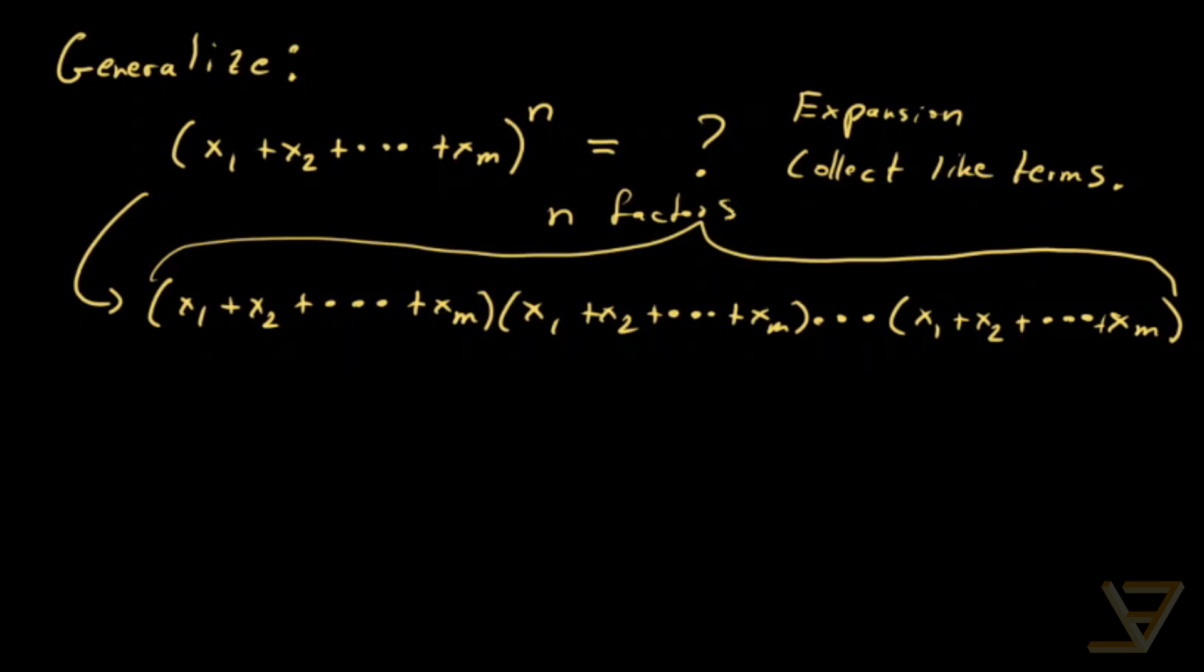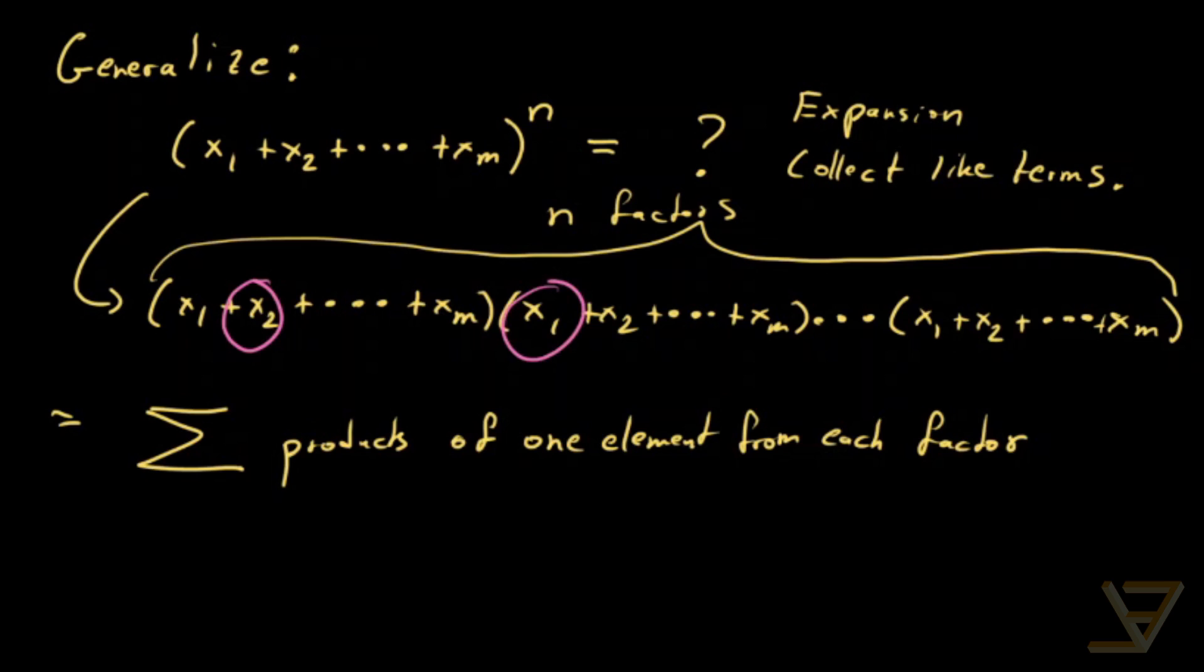And now what happens is that in the expansion we get a sum of products and each product contains exactly one element from each factor. What I mean by that is something like this. We have, for example, we take x2 from the first factor, then we take x1 from the second factor and we keep going until we take some term from the last factor. So there are n places and there's m possibilities for each one. So there will be m to the power of n terms.